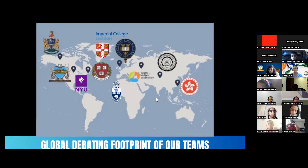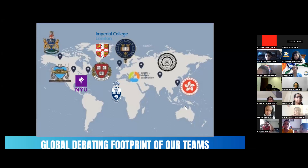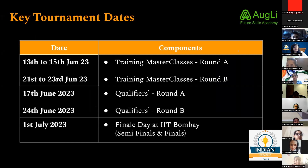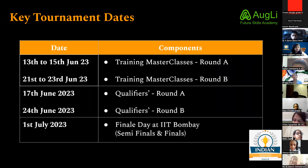We obviously want you to also be one of them, because at the end of the day we want people from India to represent India in debating circles as well. Let's come to what we're going to do today and the structure of the entire tournament. Today is the 13th. We're going to have master classes for all people debating on 17th June, from 13th to 15th June. The entire tournament happens in two rounds — Round A on 17th June and Round B on 24th June — and we've segregated debaters into two parts so we can train them better.